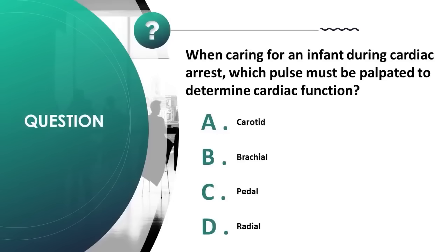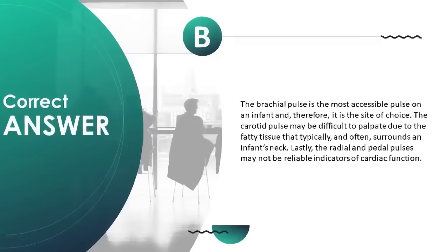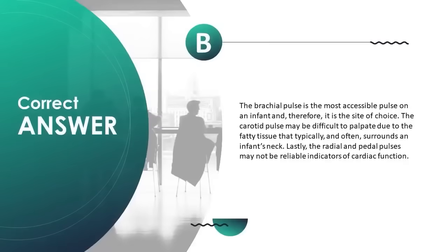The brachial pulse is the most accessible pulse on an infant and therefore it is the site of choice. The carotid pulse may be difficult to palpate due to the fatty tissue that typically surrounds an infant's neck. The radial and pedal pulses may not be reliable indicators of cardiac function.